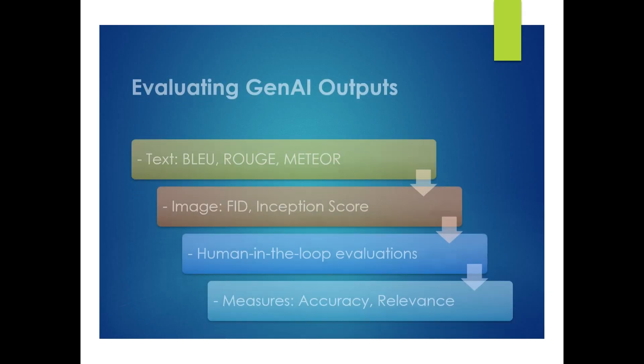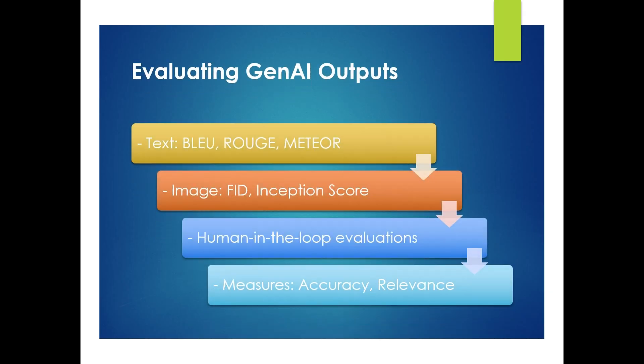How do you evaluate generative AI outputs? For text, use BLEU, ROUGE, or METEOR scores. For images, FID and Inception Score are common. But human evaluations like coherence, factual accuracy, and relevance are often more important.